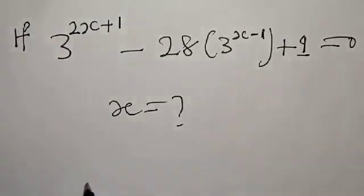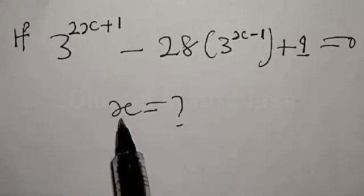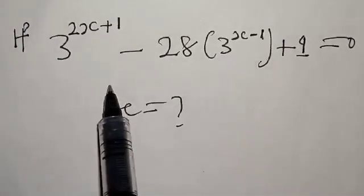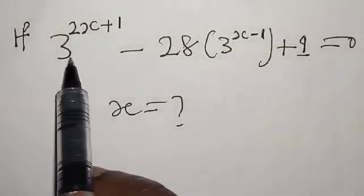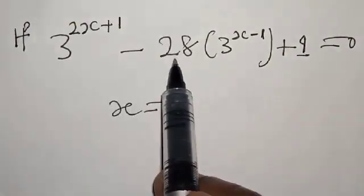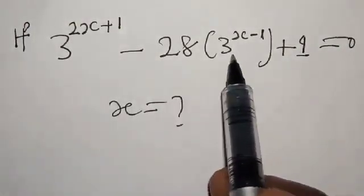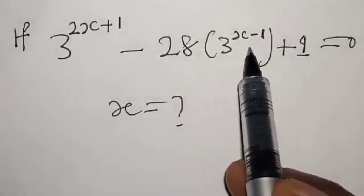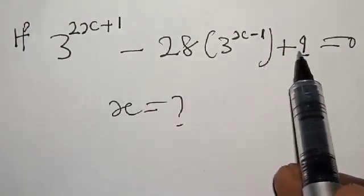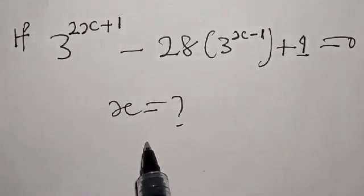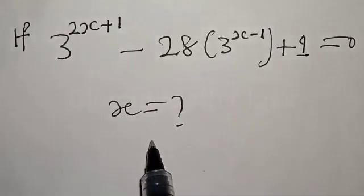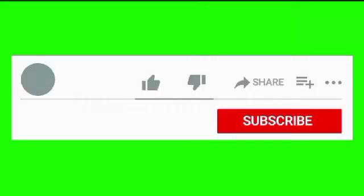Hi everyone, welcome to my class. In this class, we want to find the value of x from this given exponential equation: if 3 raised to the power 2x plus 1, minus 28 into 3 raised to the power x, minus 1, plus 1 is equal to 0, then what is the value of x?